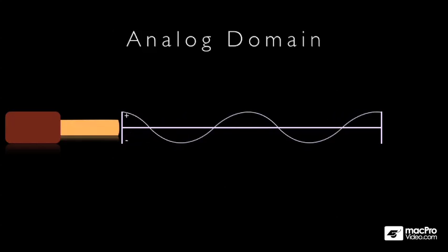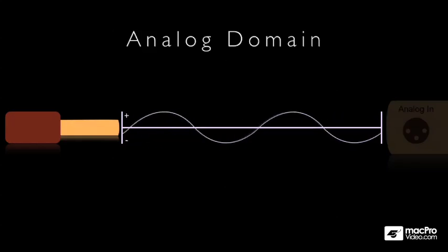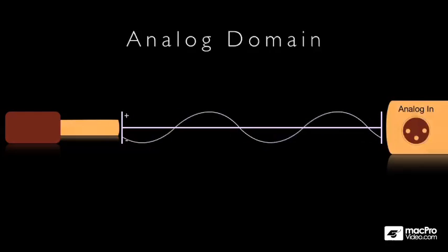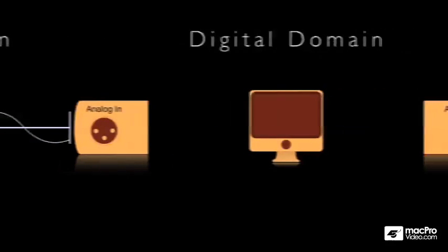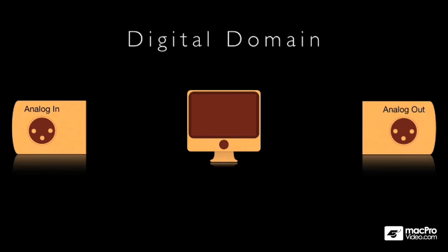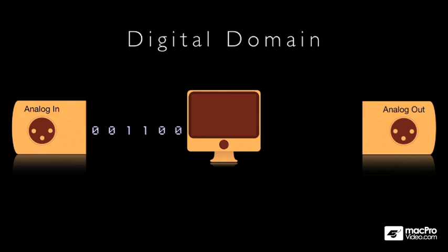And once this analogue signal is captured by an audio interface, it enters the digital domain, where it exists as a series of zeros and ones, and these are passed to our computer for processing.